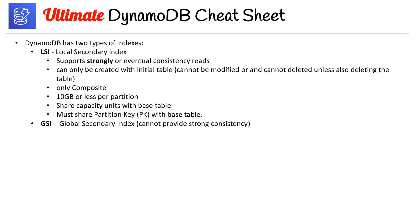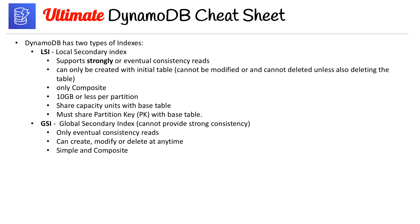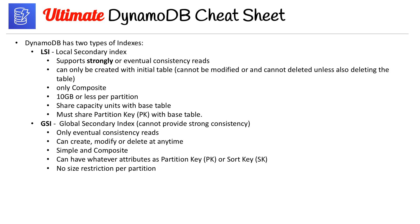Moving on to GSIs — Global Secondary Indexes. They cannot provide strong consistency; the only way to get strong consistency is with LSIs — very important to remember. GSIs only support eventually consistent reads. They can be created, modified, or deleted at any time, which is extremely convenient. They support both simple and composite keys, the partition key and sort key can be whatever you want, there are no size restrictions per partition, and GSIs have their own capacity settings.